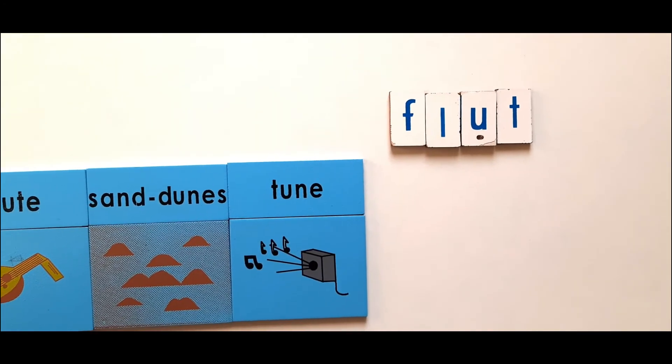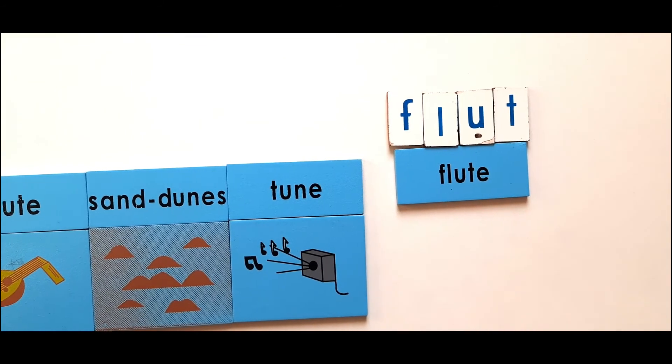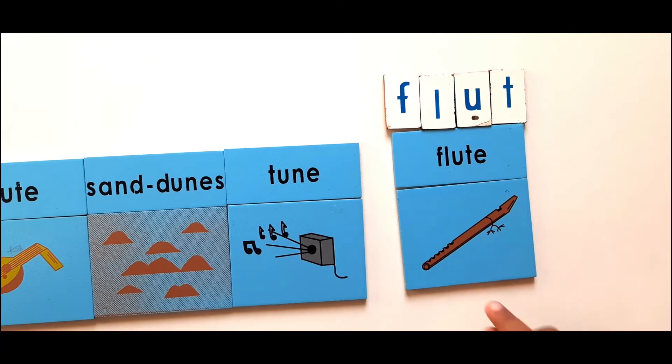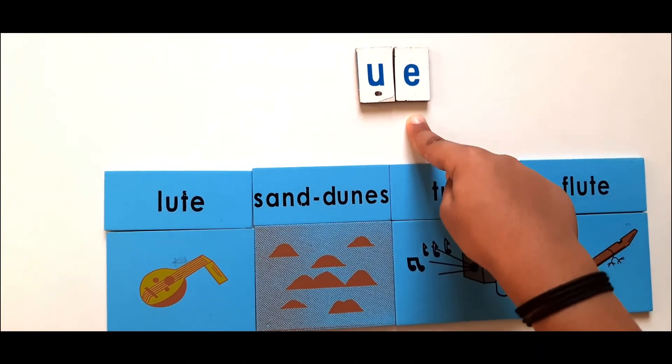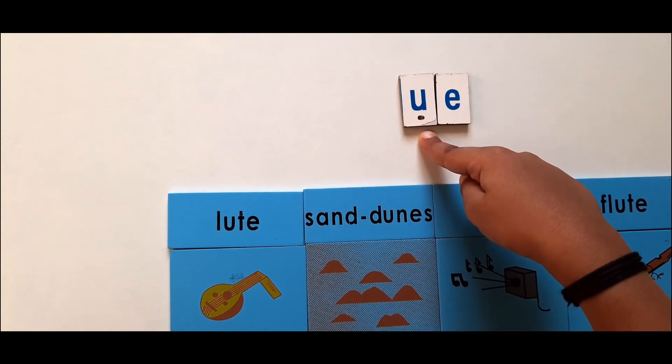Flut. If I add the magical E sound, it will become flute. Flute. E will make the magical sound. E will turn A to U.